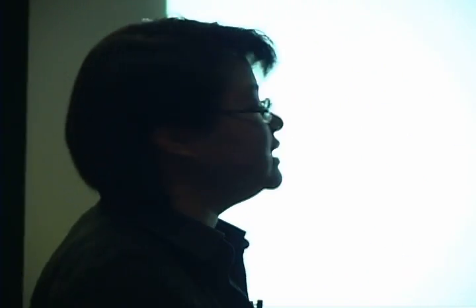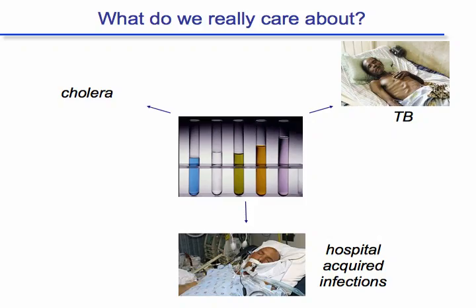Now let me shift gears into the academic setting and ask: are there ways to think outside the box? The premise is: we screen to kill bugs in a test tube — but is that really what we care about? What we care about is the patient with cholera, the patient with TB, or the patient with hospital-acquired infections. The behavior of a bug in the patient is not the same as in a test tube. When we screen in a test tube, we ignore the patient and the host. The interaction between the host and the bacterium is actually extremely complex.